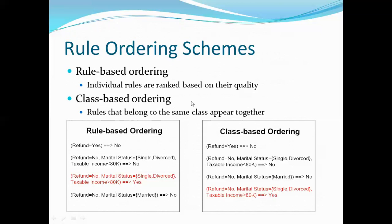In class-based ordering, classes are sorted in decreasing order of prevalence or frequency. Rules belonging to the same class appear together. The most frequent class comes first.